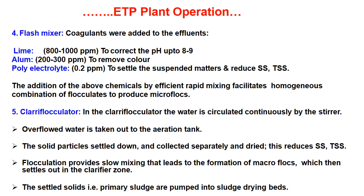Number five is the clariflocculator. In the clariflocculator, water is circulated continuously by the stirrer. The overflowed water is taken out to the aeration tank. Solid particles settle down and are collected separately and dried, reducing SS and TSS. Flocculation provides slow mixing leading to the formation of macro flocs, which settle out in the clarifier zone. The settled solids — primary sludge — are pumped into sludge drying beds.